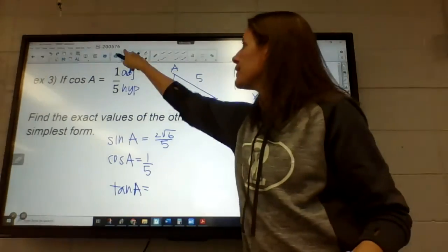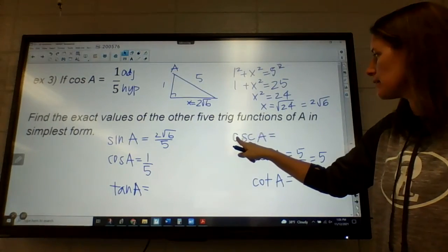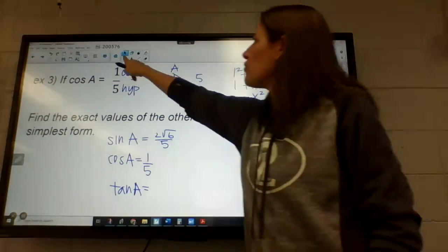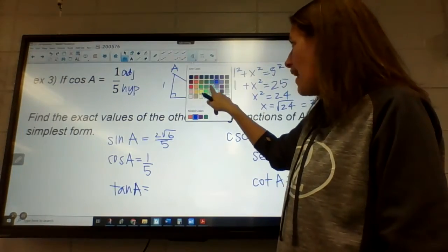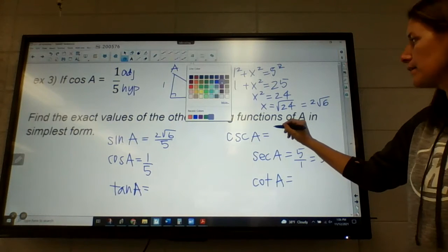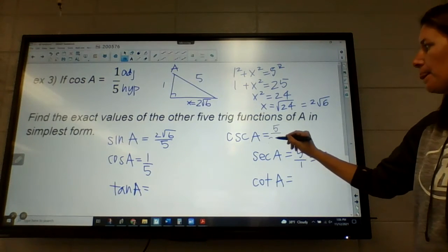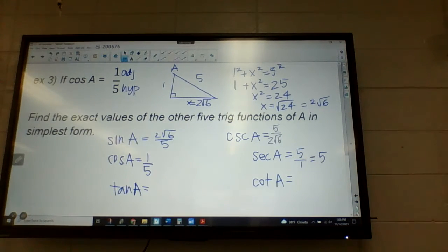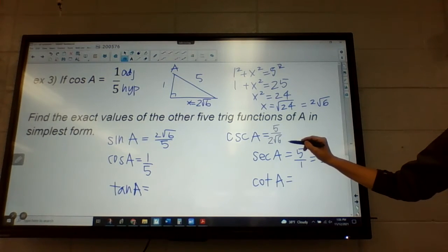However, when we go over here to do our cosecant, we're going to flip this over. And when we flip it over, then that one's not going to be okay. So we're going to have to multiply by...